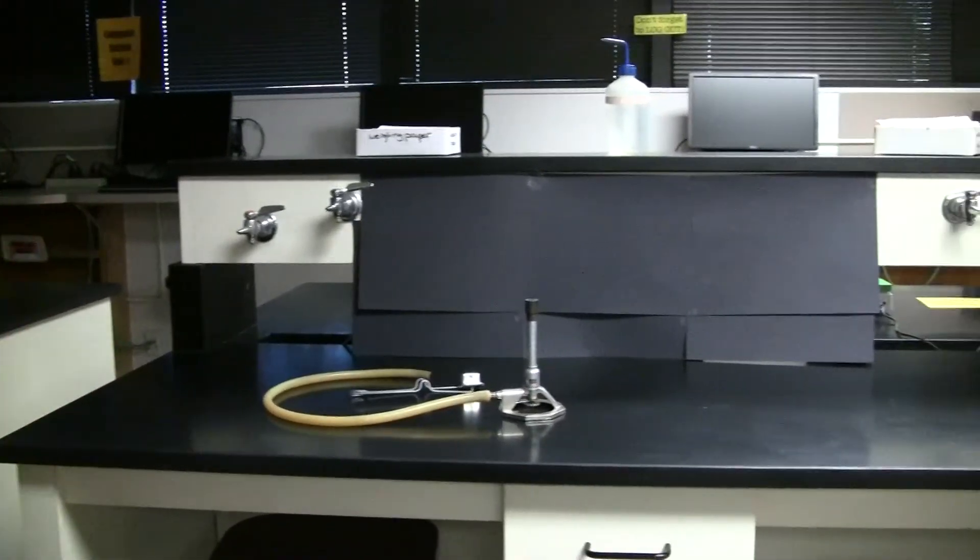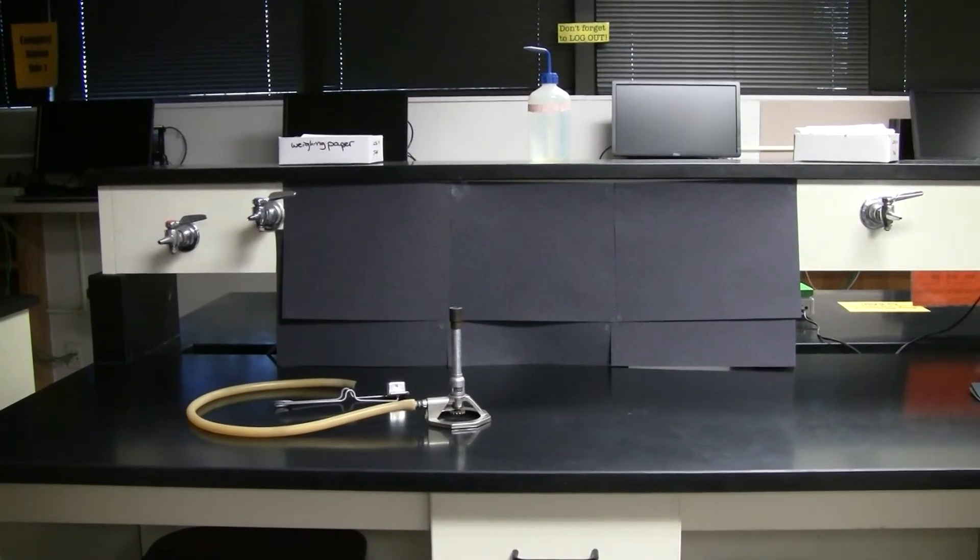Now let's talk about Bunsen burner safety. To start this process, you'll go and obtain a Bunsen burner and a striker from the cabinets underneath the hoods.